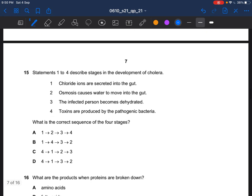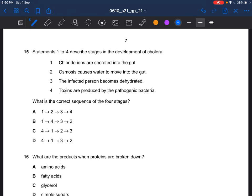Next question. Statements 1 to 4 describe stages in the development of cholera. What is the correct sequence of the 4 stages? Cholera is caused by bacteria. So this would be first. Then the chloride ions are secreted into the gut. And osmosis causes water to move into the gut. The infected person becomes dehydrated. Then they will have like diarrhea and also loss of salts from blood. So the answer would be 4, 1, 2, 3, which is C.